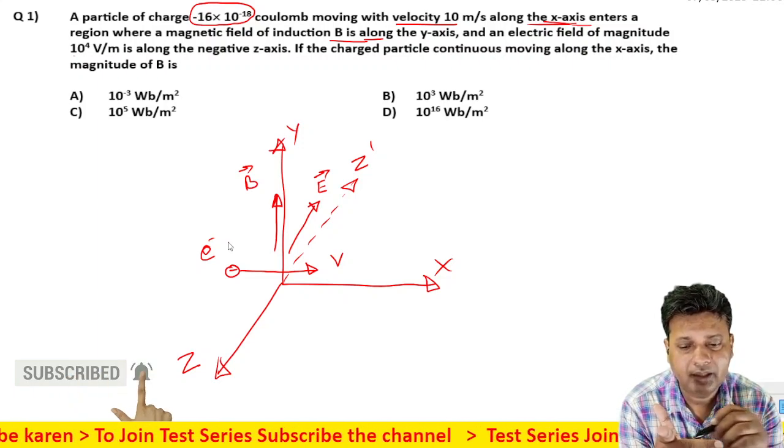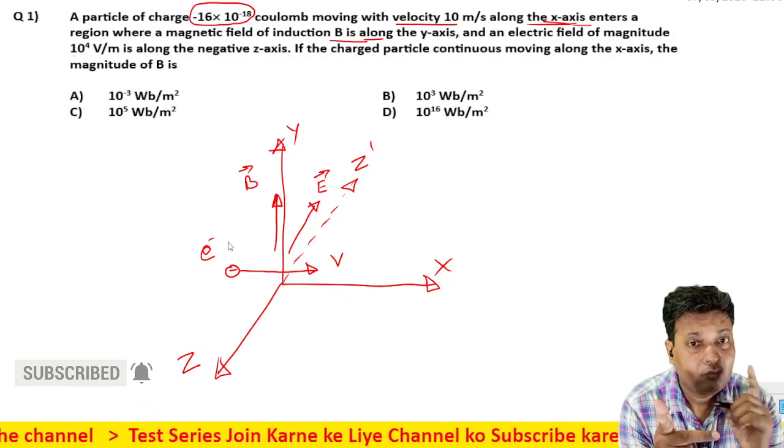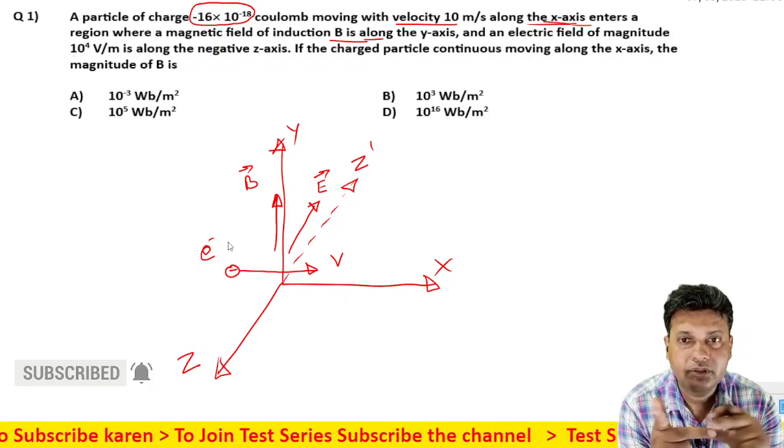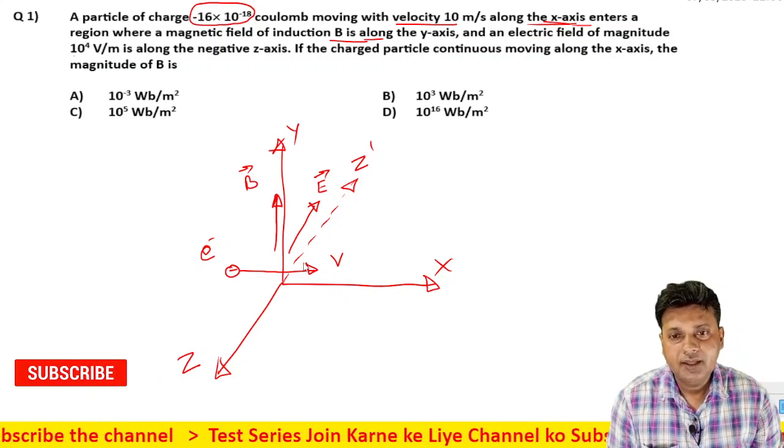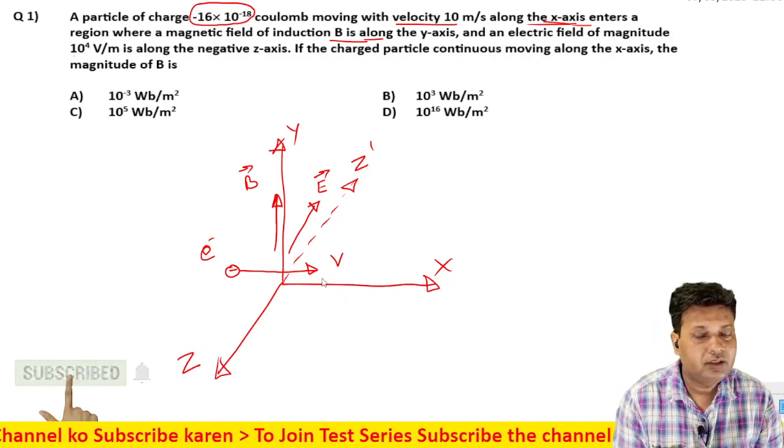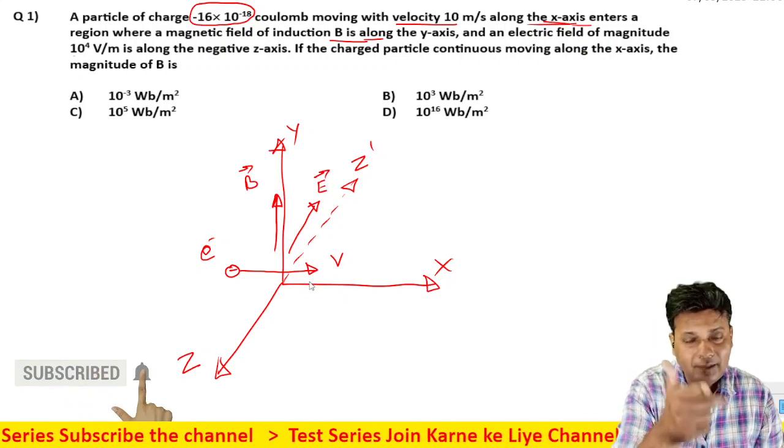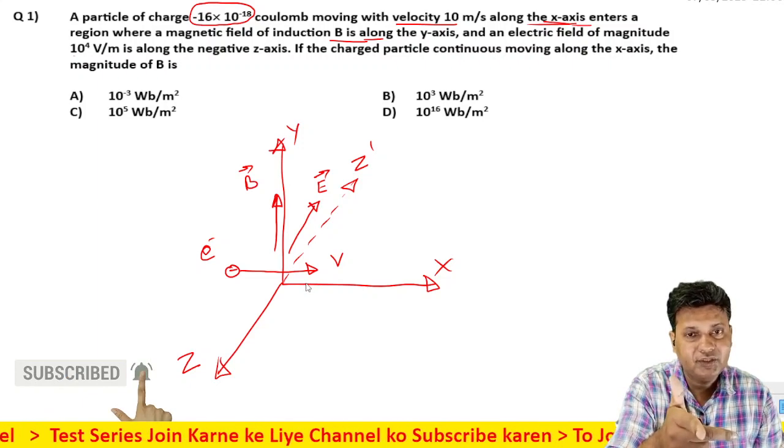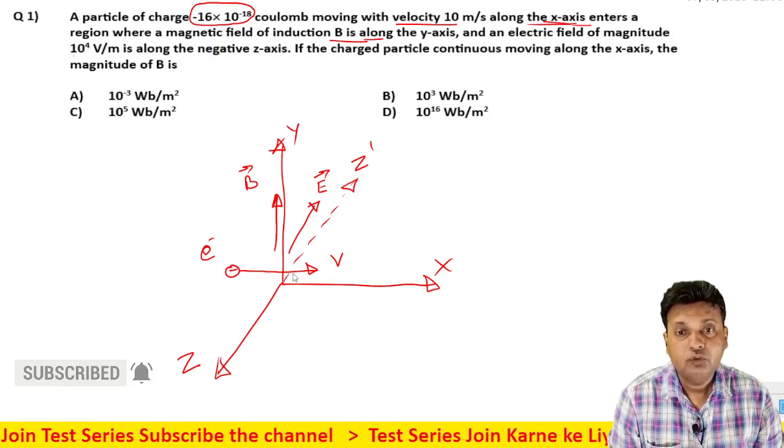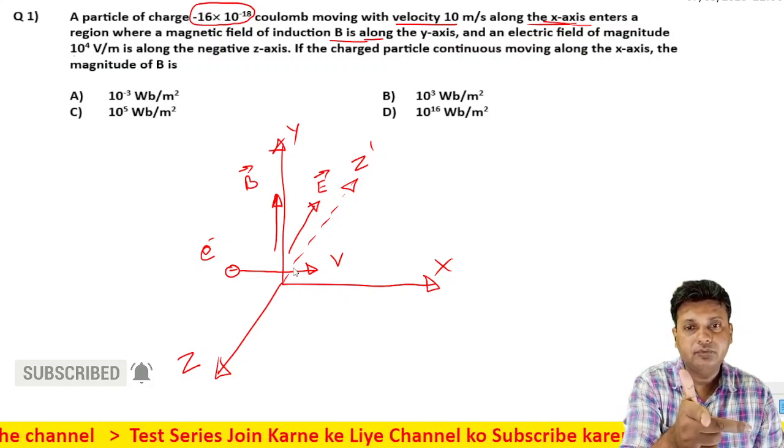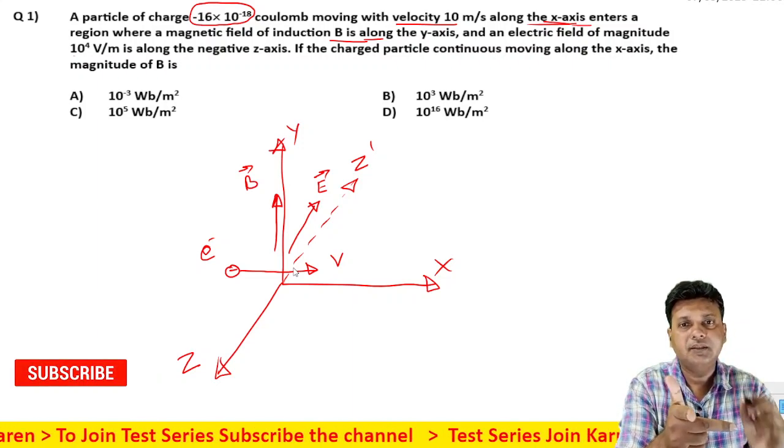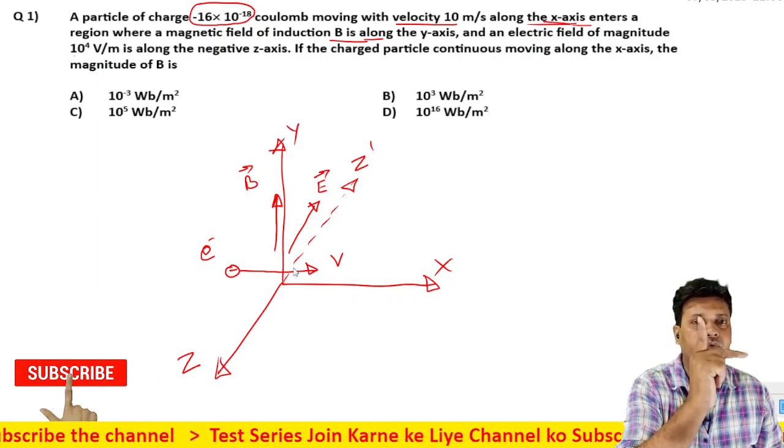The charge particle direction is shown by the middle finger for positive charge. So for positive charge, the force direction would be in one direction. But for negative charge entering the magnetic field, the force direction is opposite according to Fleming's rule.